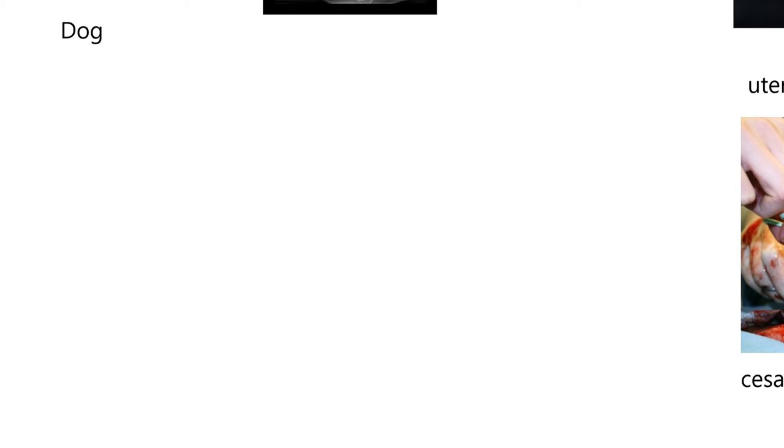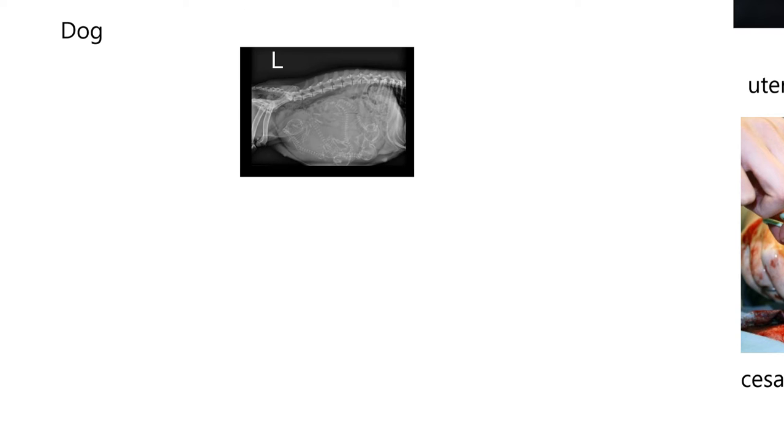Now we're going to look at some dog photos. When I showed the cat just a moment ago, I forgot to mention that the gestation length is about 60 days or so. And lo and behold, it's also 60 days for the dog. Of course, these animals are born pretty immature, so 60 days of gestation isn't that long.